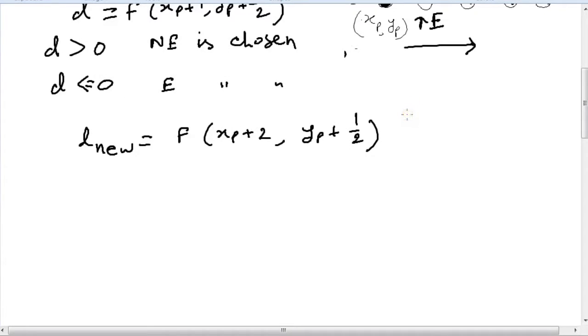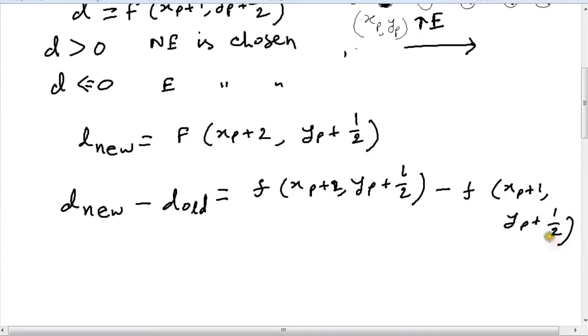Now the difference between these two d's, d_new minus d_old would be f(xp plus 2, yp plus half) minus f(xp plus 1, yp plus half).